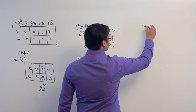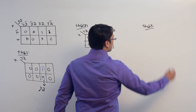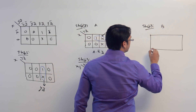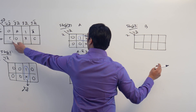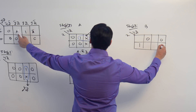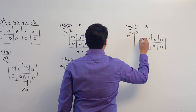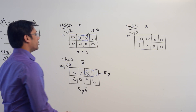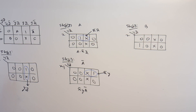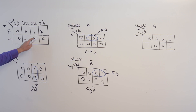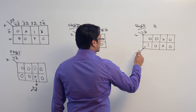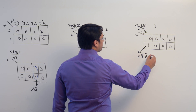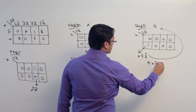Now take another variable — the next variable is b. We are creating for b. Take b, keep it as one, keep all the other variables as zero. This gives zero, don't care, don't care, and zero. Now try to create a subcube. We cannot make a larger subcube, so this single cell is representing x, y complement, z complement, and combining with b, it becomes b, x, y complement, z complement.